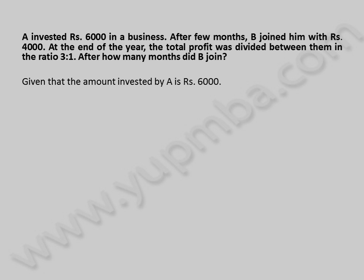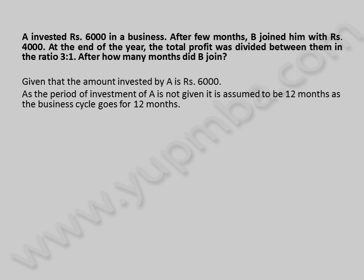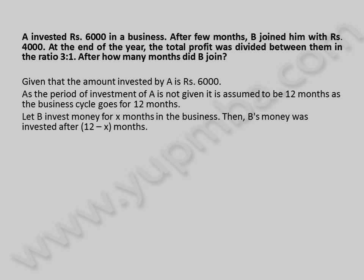Given that the amount invested by A is 6,000 rupees. As the period of investment of A is not given, it is assumed to be 12 months as the business cycle goes for 12 months. Let B invest money for X months in the business. Then B's money was invested after 12 minus X months.